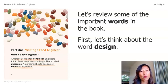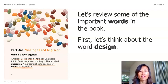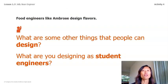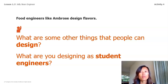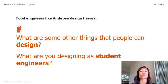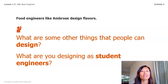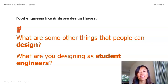To design is to think of a way to make something. Engineers design things for a particular use. Ambrose designs new flavors of candy for people to eat. What are some other things that people can design? Thinking of glue, ink, toothpaste, medicines, cars, computers. And what are you designing as a student engineer? A new glue for our school. 'Design' is a word we use in everyday language, but it has a special meaning that makes it important for doing science or engineering.